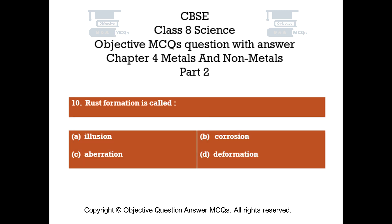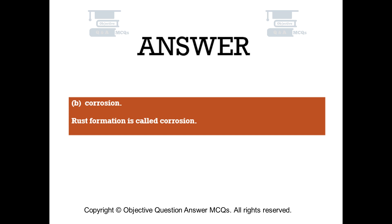Question number 10: Rust formation is called — Option A: Illusion. Option B: Corrosion. Option C: Aberration. Option D: Deformation. The right answer is Option B — Corrosion. Rust formation is called corrosion.